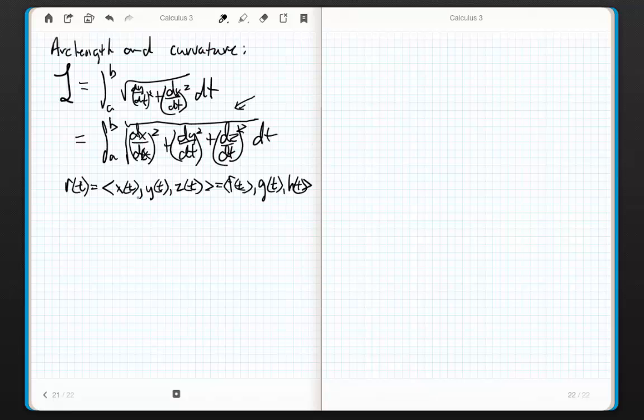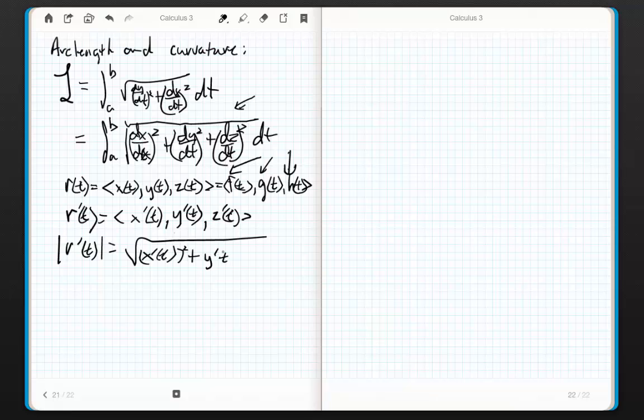But if you think about how it's written, these letters are arbitrarily chosen, and this is in the x direction, this is in the y direction, and this is in the z direction. I also know that r primed of t is equal to x primed of t, y primed of t, remember the derivative of the vector is the vector of the derivatives, z primed of t. And the magnitude of that vector is equal to the square root of x primed of t squared plus y primed of t squared plus z primed of t squared.